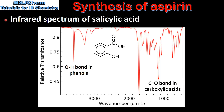Next we look at the infrared spectrum of salicylic acid. In this spectrum there are two main differences to the infrared spectrum of aspirin. The first difference is the presence of a peak that corresponds to the OH bond in phenols, which is absent in the infrared spectrum of aspirin. The second difference is the absence of a peak corresponding to a C=O double bond in esters; instead there is only one peak corresponding to the C=O double bond in carboxylic acids.